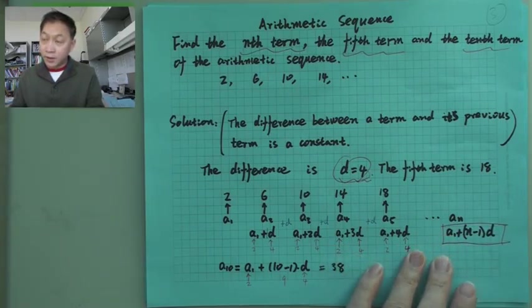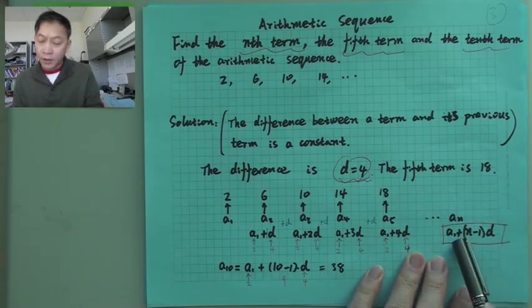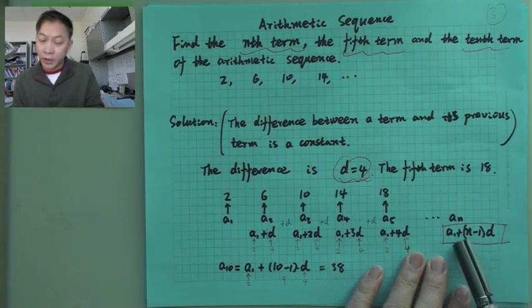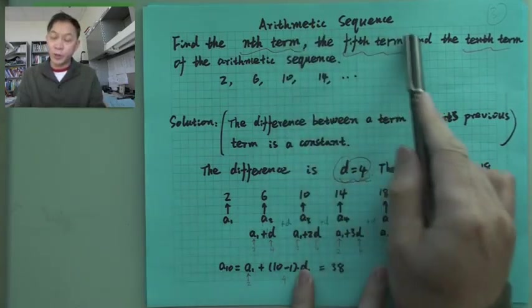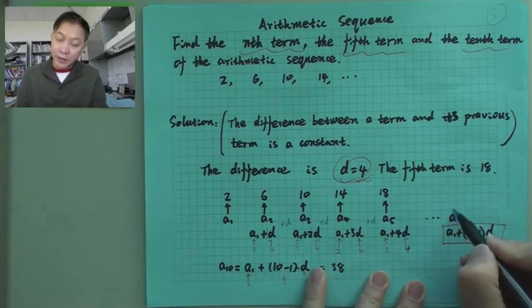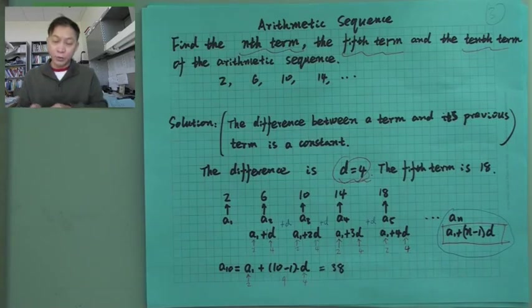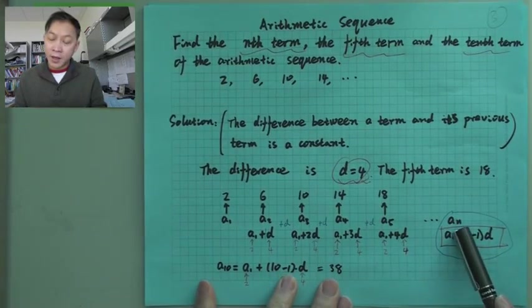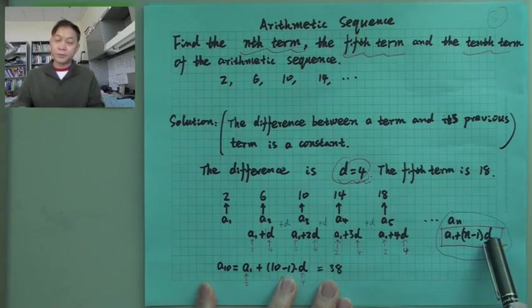And this one is the general formula. A sub N equals A1 plus (N minus 1) times D. That's the general formula. And this is true for all arithmetic sequences. And later on we will use that. So this is the big thing in this lecture. You want to remember that. The nth term is the first term plus N minus 1 times the difference.